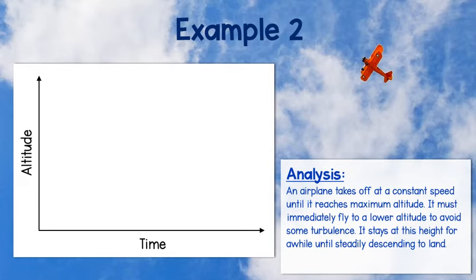Let's take a look at another example. Instead of analyzing the graph, though, we'll be working backwards to sketch the graph. So let's read through our story or the analysis first. An airplane takes off at a constant speed until it reaches maximum altitude. It must immediately fly to a lower altitude to avoid some turbulence. It stays at this height for a while until steadily descending to land.